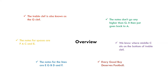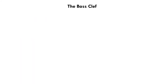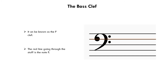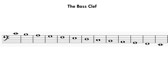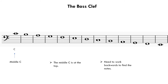Now we can move on to the bass clef. Another name you might hear it called is the F clef. This is because that red line going through the clef is the note F. This is where middle C sits on the bass clef — you can see that middle C is at the top of the staff, compared to the treble clef where the note was at the bottom. We'll work out the notes backwards from middle C just so you can see what notes the bass clef uses.